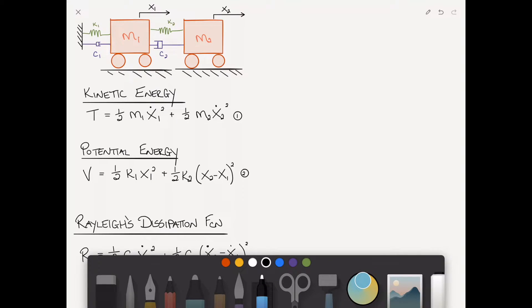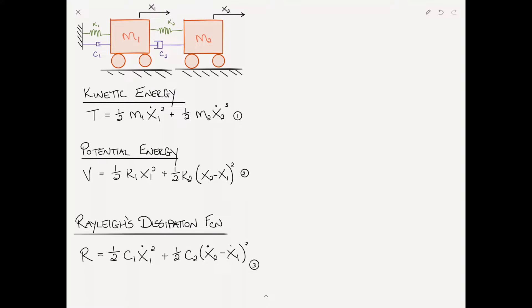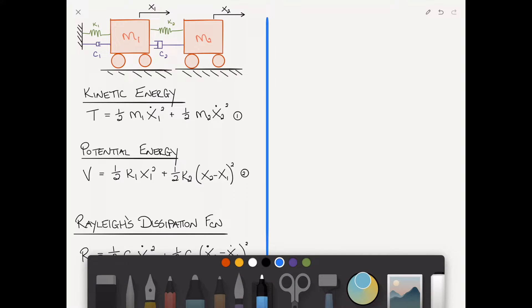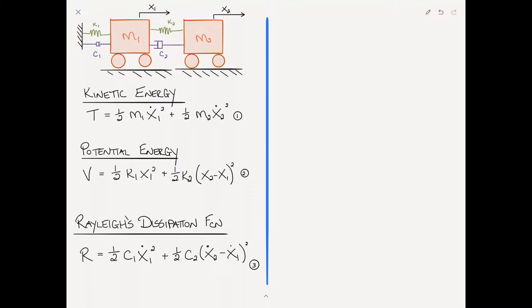The Rayleigh's dissipation function looks like the kinetic energy - a half times a constant times velocity squared. But the difference is that kinetic energy deals with velocity of the mass, while Rayleigh's dissipation function uses the relative velocity between the two ends of the damper.